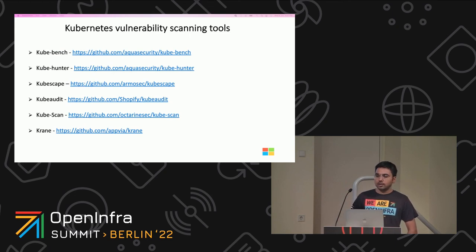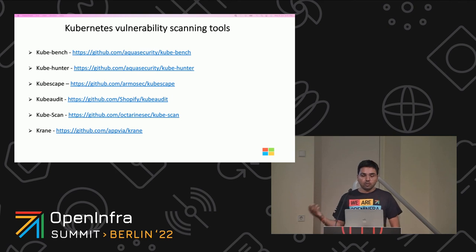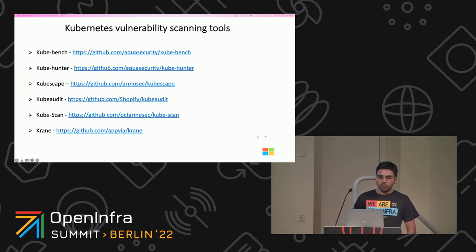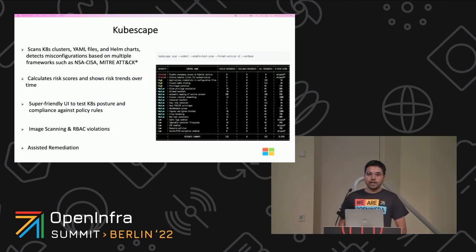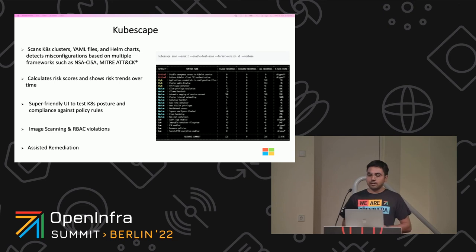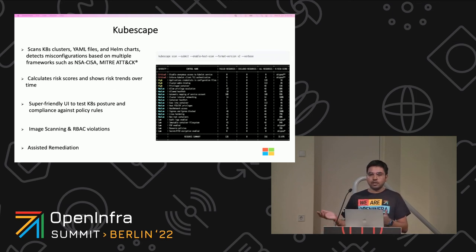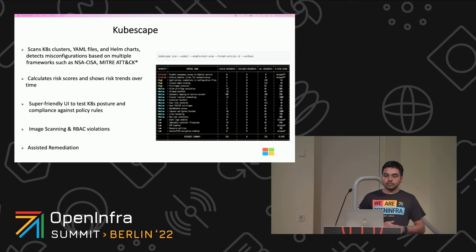These are some open source Kubernetes vulnerability scanning tools, some of which have been developed keeping in mind the frameworks we discussed: Kubebench, Kubehunter, KubeScape, KubeAudit, KubeScan, and Crane. I'll talk specifically about KubeScape. KubeScape scans your Kubernetes cluster, static YAML files, and Helm charts, detecting misconfigurations based on multiple frameworks such as NSA, CIS, and MITRE ATT&CK. It calculates risk scores and shows risk trends over time. It has a very user-friendly UI so you don't need to see the complete list of policy violations in your console — you can go directly to the UI to see different violations. It also has capabilities for image scanning and RBAC violations, and it can assist in remediation by telling you what steps to take to resolve those policy violations.